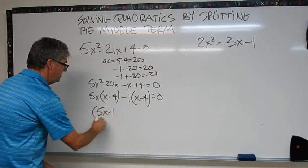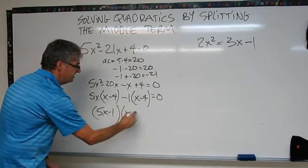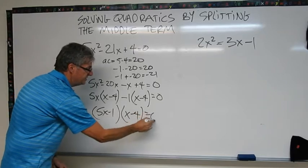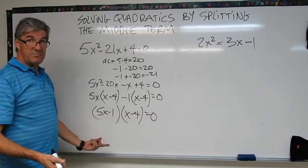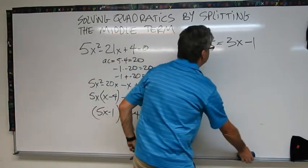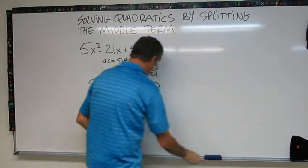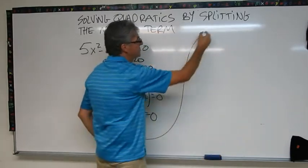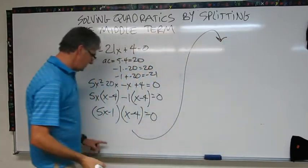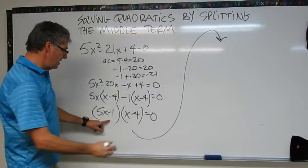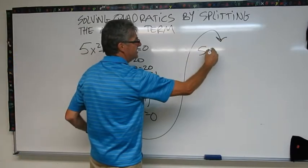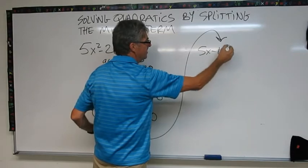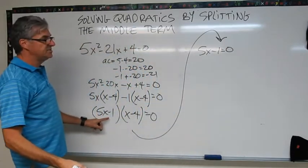5x minus 1 times x minus 4 equals 0. Now I can see I'm running out of space so I'm going to get rid of this problem and we're just going to carry this on over to the top. So I'm going to do my branch. I have 5x minus 1 equals 0. That's my first branch. Let's solve that one.